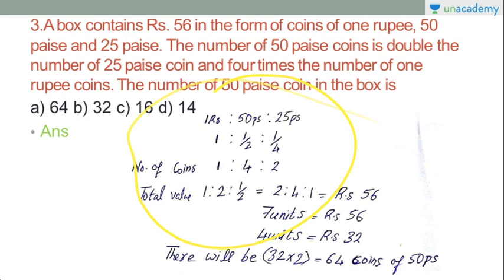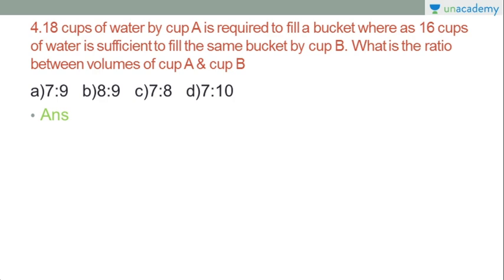18 cups of water by cup A is required to fill a bucket, whereas 16 cups of water is sufficient to fill the same bucket by cup B. What is the ratio between volumes of cup A and cup B? We use 18 cups on the A side and 16 cups on the B side.